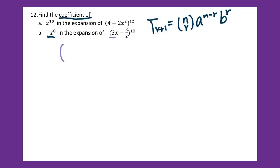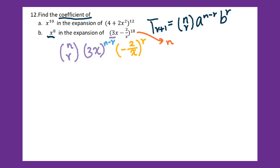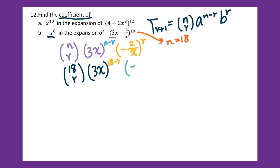Therefore, we plug in. We get n taken r, and a is 3x, so we do 3x to the n minus r power, times negative 2 over x to the r power. According to the information, we know n equals 18. So we plug in 18 taken r, then 3x to the 18 minus r power, times negative 2 over x to the r power. We need to simplify and put all x together so that we can set up x to the eighth power.